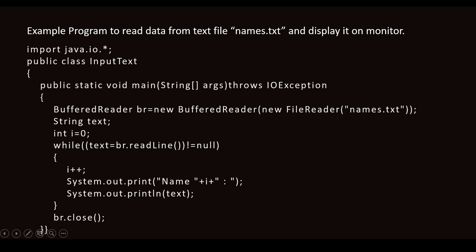Instead of writing in two separate lines, it is written in a single line. Make sure names.txt is available on the disk, otherwise it will throw an error. Then you have a string variable called text, which is used to get the names from the file and store them. You also have a counter int i = 0, to count how many entries are available and to display them on screen. In the while loop, the condition is: while((text = br.readline()) != null).